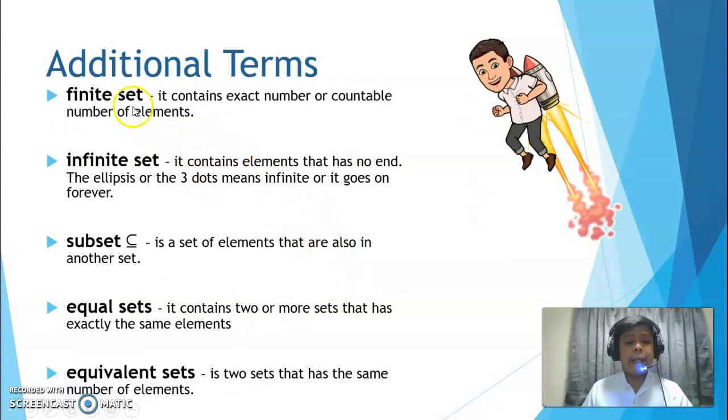We also have additional terms. Finite set contains exact number or countable number of elements. You can count its elements. Infinite set, these are sets that have uncountable elements. Sometimes, or usually, it uses the symbol of ellipses, or three dots at the end. What that means is infinite or it goes on forever. Subset, it is a set of elements that are also in another set. So it's like you have a set, and then you make more groups from that set. Equal sets are two or more sets that have exactly the same elements. They look exactly alike in elements. When we say equivalent set, they are sets that have the same number of elements.